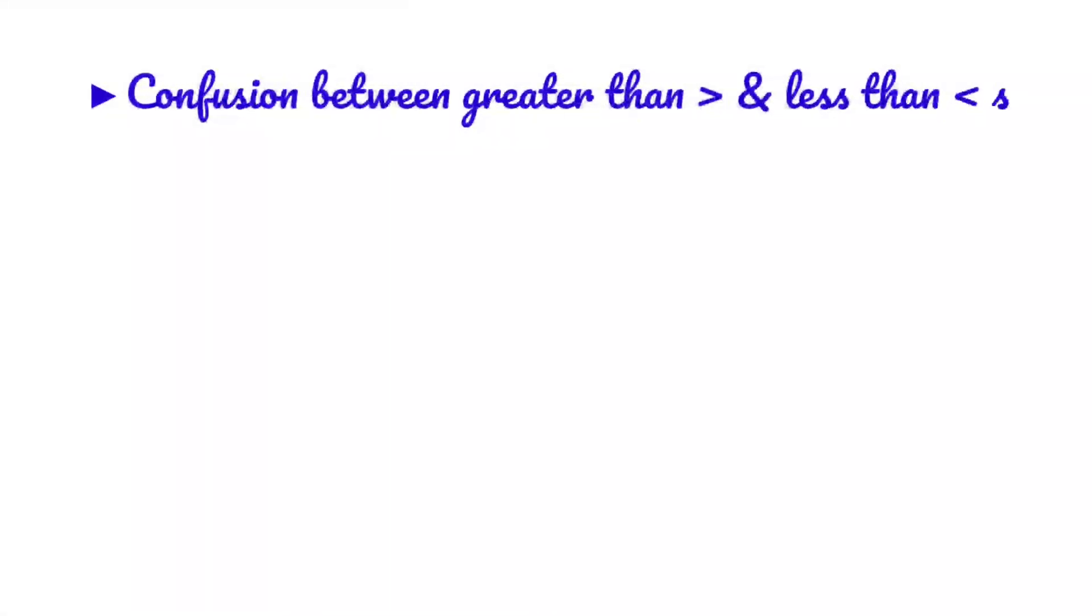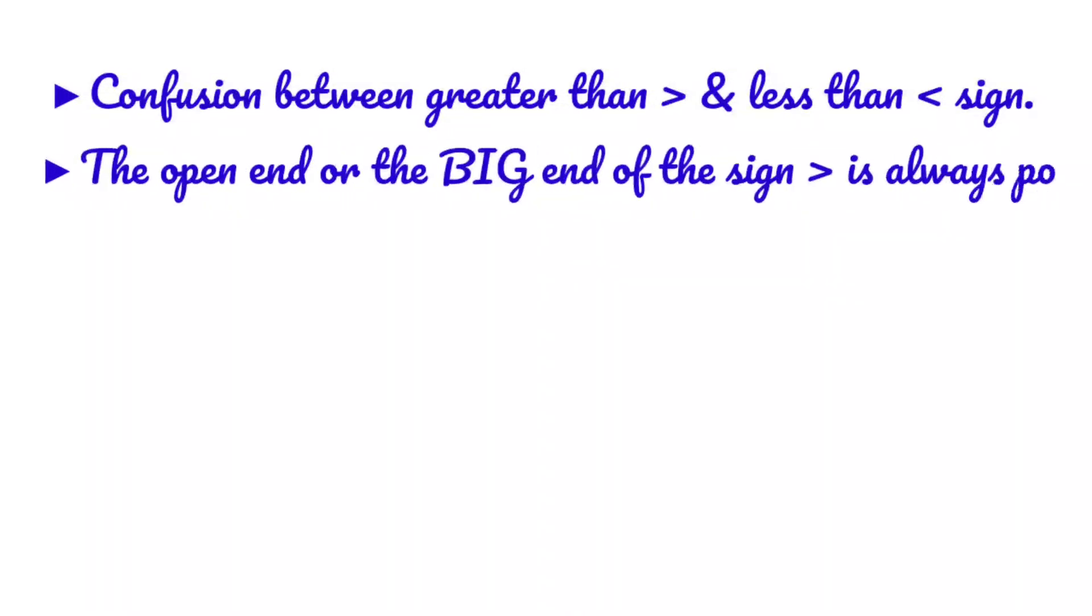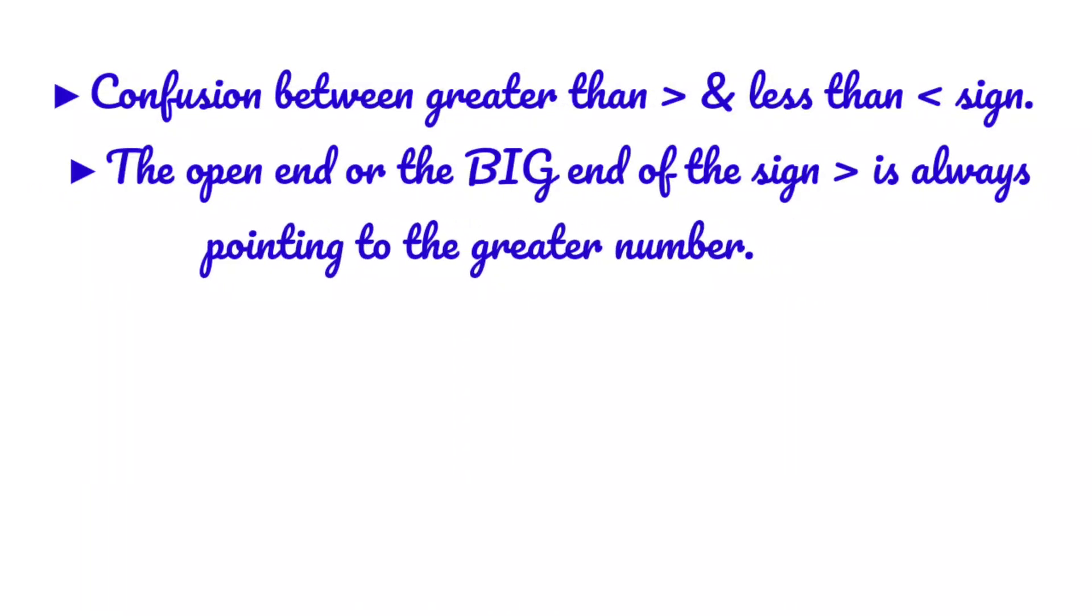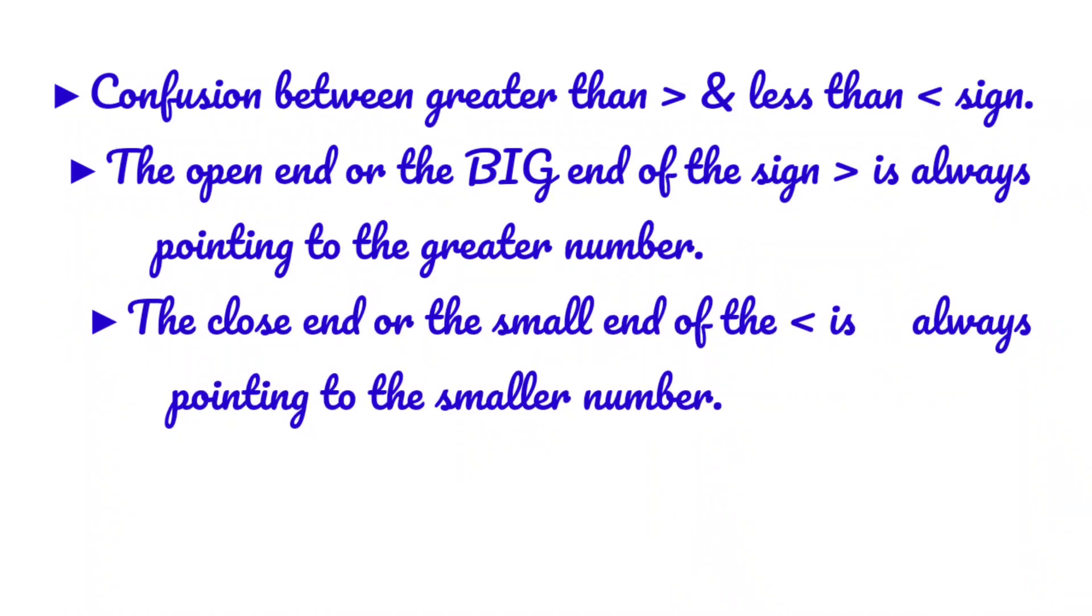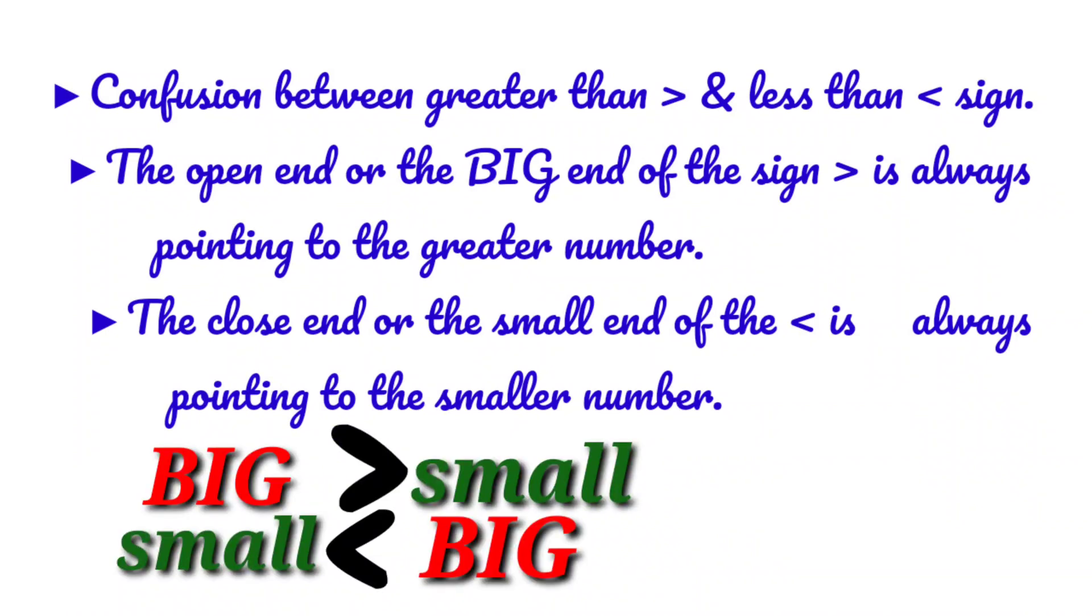Now I will tell you the easy tricks to remember these symbols. If you are confused between greater than and less than sign you have to remember these points. The open end or the big end of the sign is always pointing to the greater number. The closer end or the small end of the sign is always pointing to the smaller number.